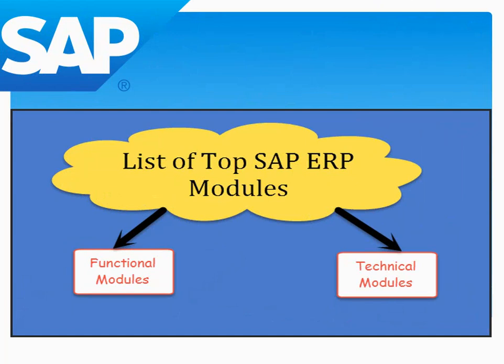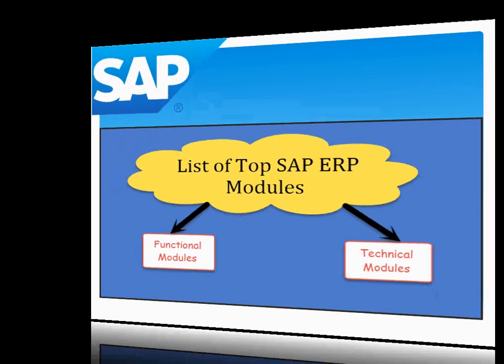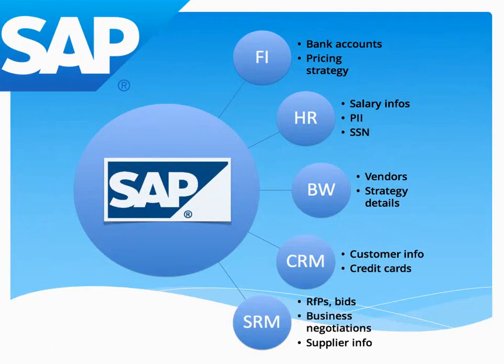SAP has so many modules. Some key modules are FI, HR, BW, CRM, and SRM. The FI module is used for bank accounts and pricing strategy. HR is used for salary info, PII, and SSN. BW is used for vendor strategy details. CRM is used for customer info and credit cards.